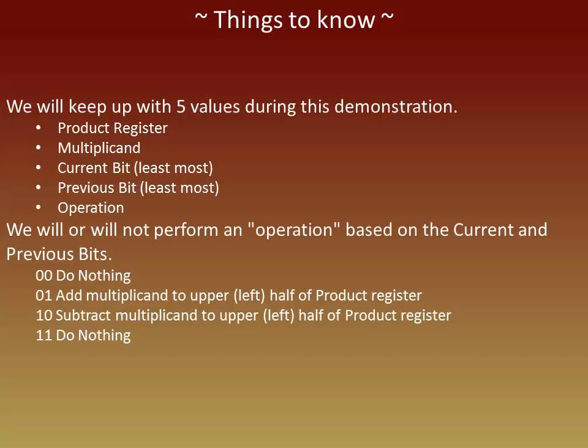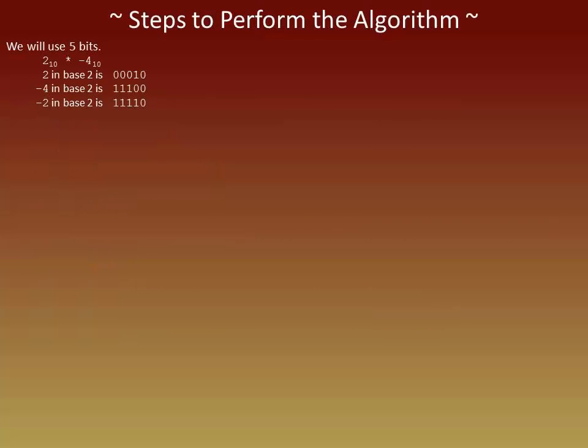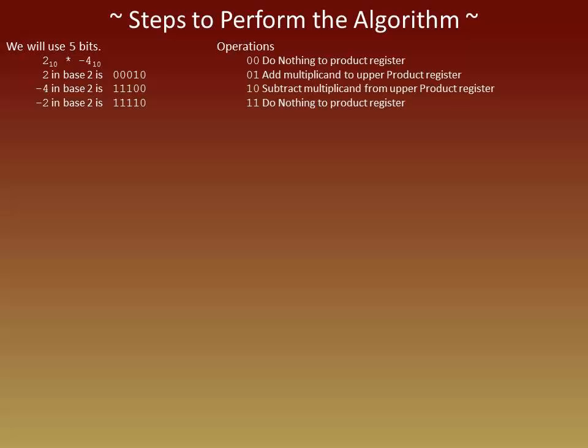It may not make a lot of sense right now, but it should by the end of the video. So let's get started. Here we'll set up a chart to track our values. We will start by looking at the numbers in the multiplication problem. For simplicity's sake we are going to use 5 bits for the signed integer. The binary number for 2 is 00010 and the binary number for negative 4 is 11100. Here are the operations: 0,0 means do nothing; 0,1 means to add the multiplicand; 1,0 means to subtract the multiplicand; and 1,1 means to do nothing again.